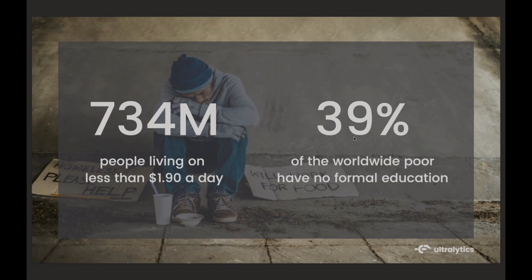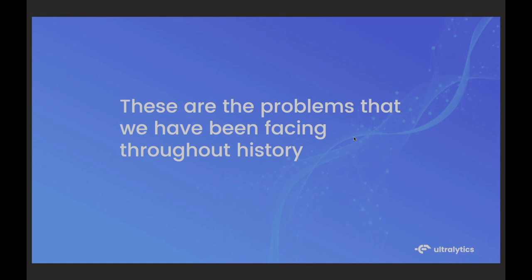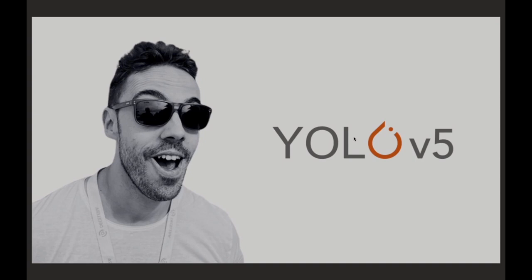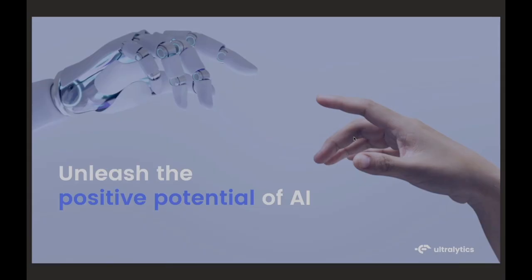Microplastics are showing up in human bloodstreams at crazy high concentrations. We just don't know the long-term consequences. I'm Spanish and American — in Spain there's universal healthcare, but in the US you have to pay a lot of money. 50% of the world's population lacks access to essential healthcare services, and every year 100 million people are pushed into extreme poverty due to health expenses. Hunger is another key problem — almost 10% of the world's population faces hunger day to day, and a staggering 2 billion people lack year-round access to adequate food.